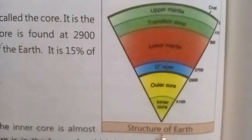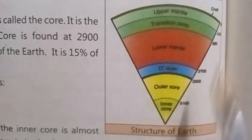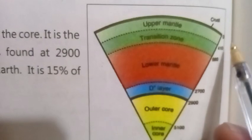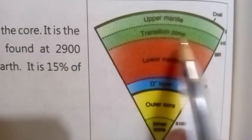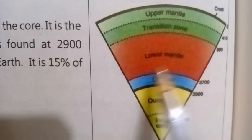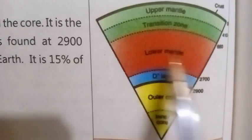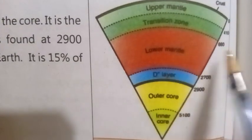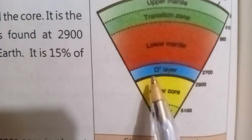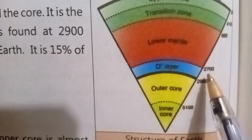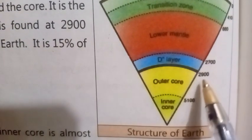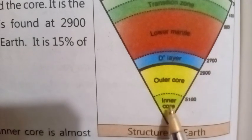Structure of the earth by depth: crust at surface, upper mantle at 0 km, transition zone at 410 km, lower mantle at 660 km, D layer at 2,700 km, outer core at 2,900 km, inner core at 5,100 km.